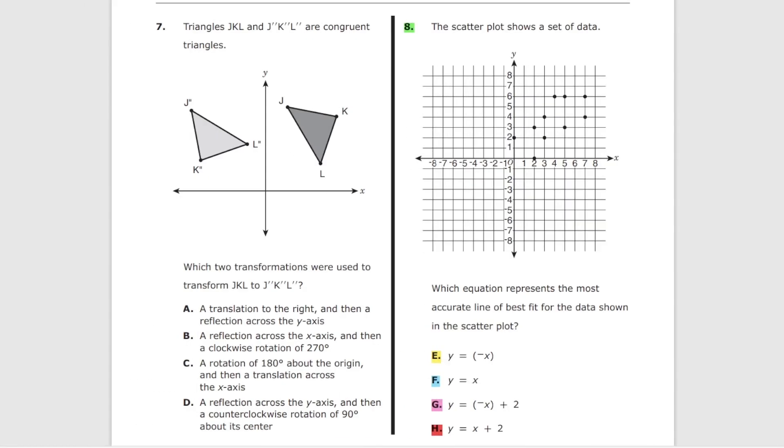This scatter plot shows a set of data. Which equation represents the most accurate line of best fit for the data shown in this scatter plot?